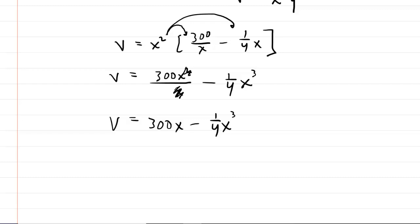Now that you have your objective simplified and in terms of a single variable, you would want to compute its derivative. This is the next step in any optimization problem. So we can denote the derivative as V prime. The derivative of 300 X is 300. And then over here, we have to use the power rule. So we'll pull that power down and multiply to give us 3 fourths X and then subtract 1 from the exponent to make it X squared.